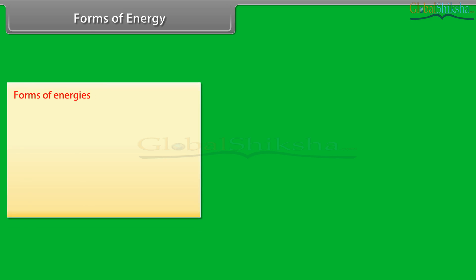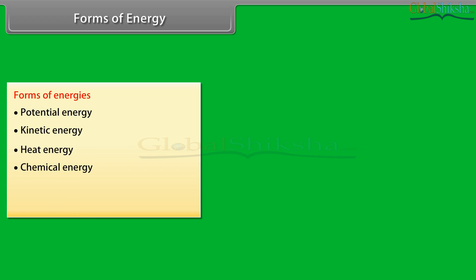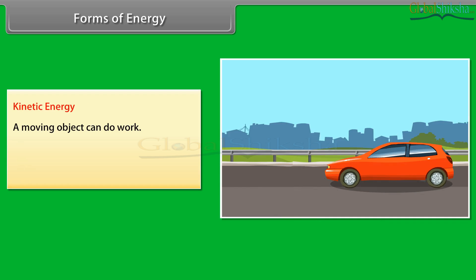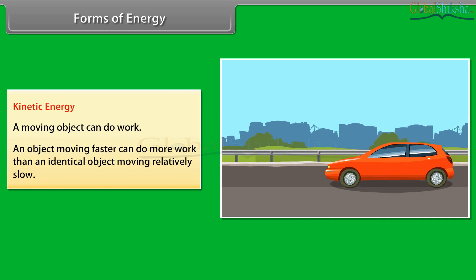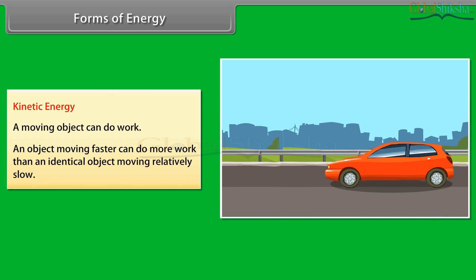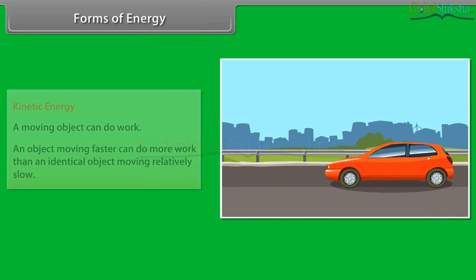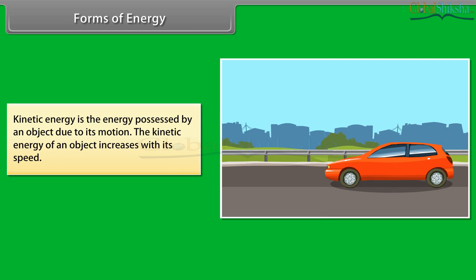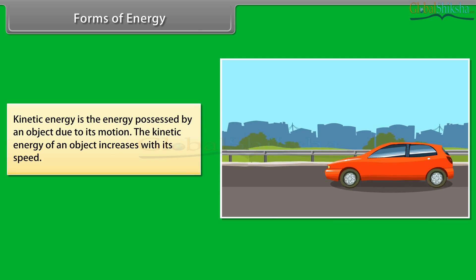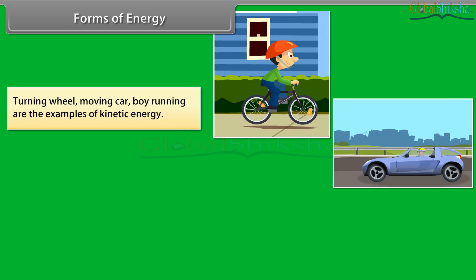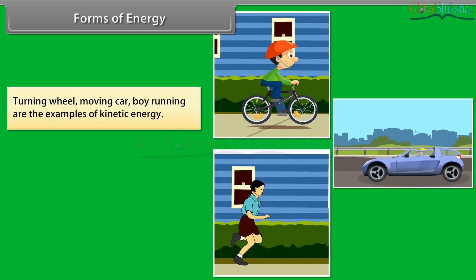Forms of energy. There are many different forms of energy. These include potential energy, kinetic energy, heat energy, chemical energy, electrical energy and light energy. Let us first study kinetic energy. A moving object can do work, and an object moving faster can do more work than an identical object moving relatively slow. Kinetic energy is the energy possessed by an object due to its motion. The kinetic energy of an object increases with its speed. Turning wheel, moving car, and boy running are examples of kinetic energy.